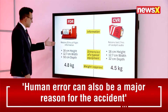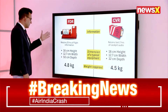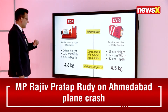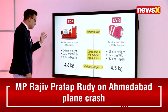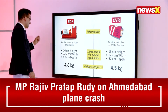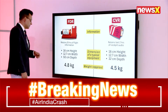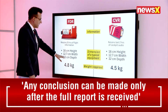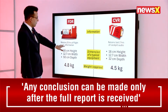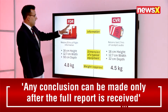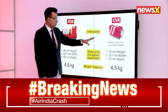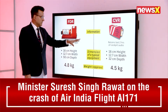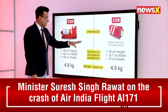The flight data recorder retains 24 to 25 hours of flight information. Its dimensions are 16 centimeters high, 12.7 centimeters wide, and 50 centimeters in depth. It is very light at only 4.8 kg, though these models can vary.